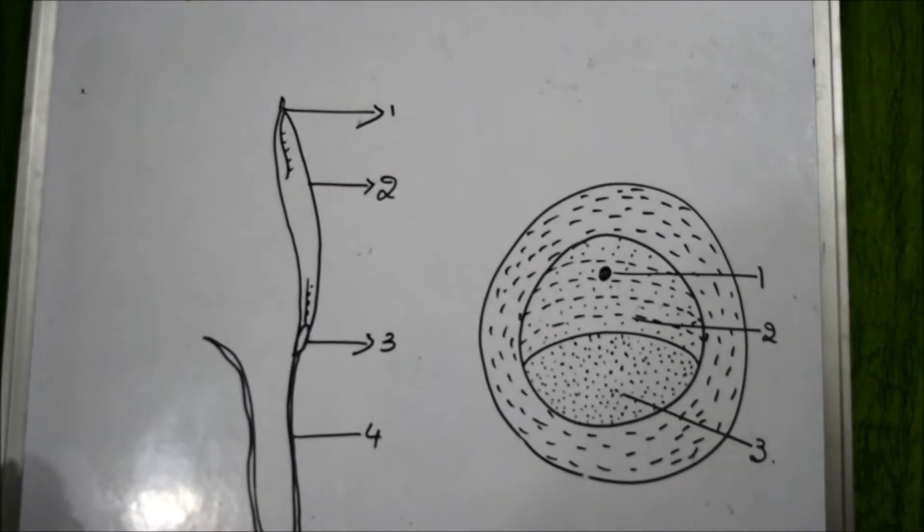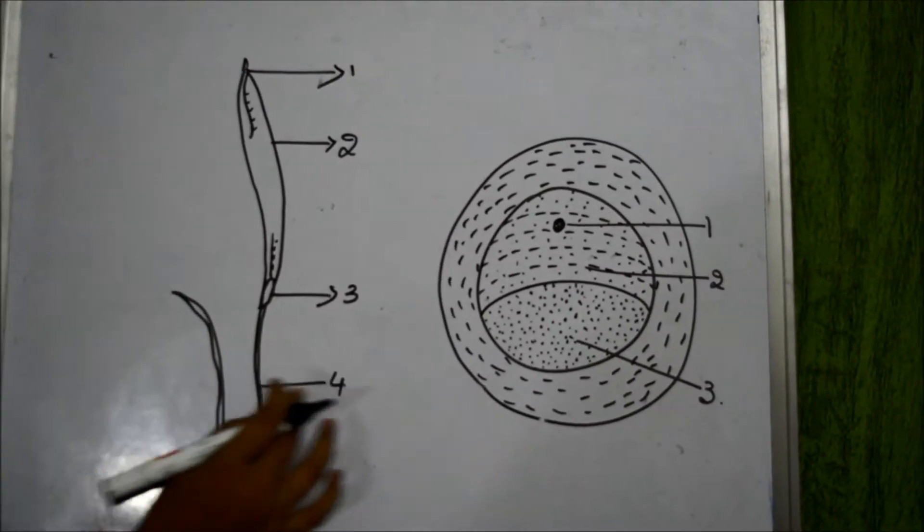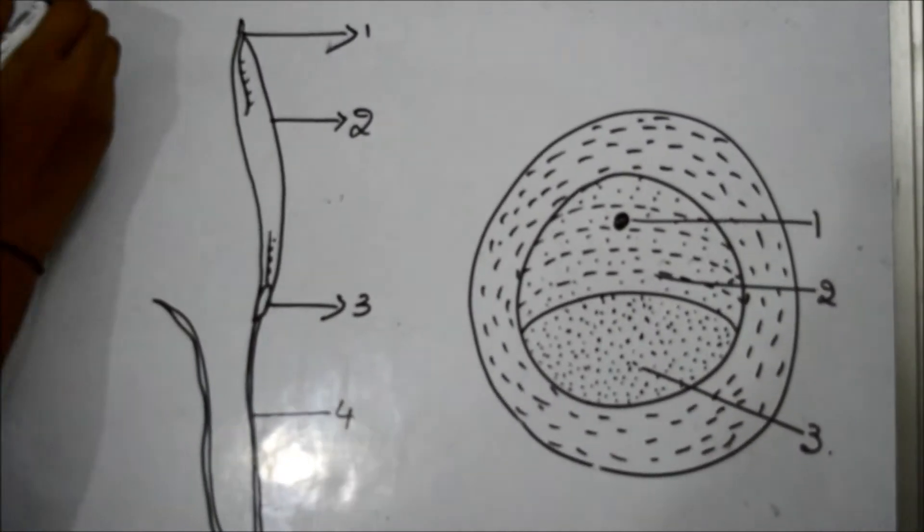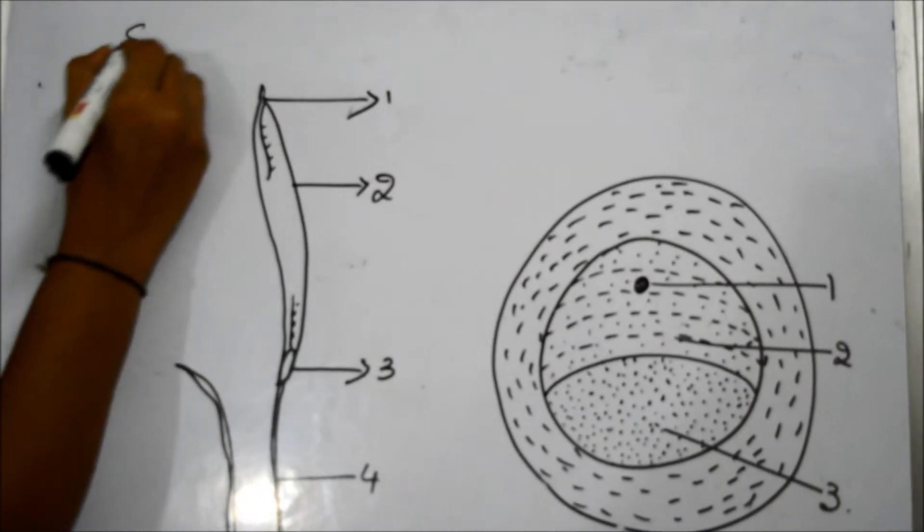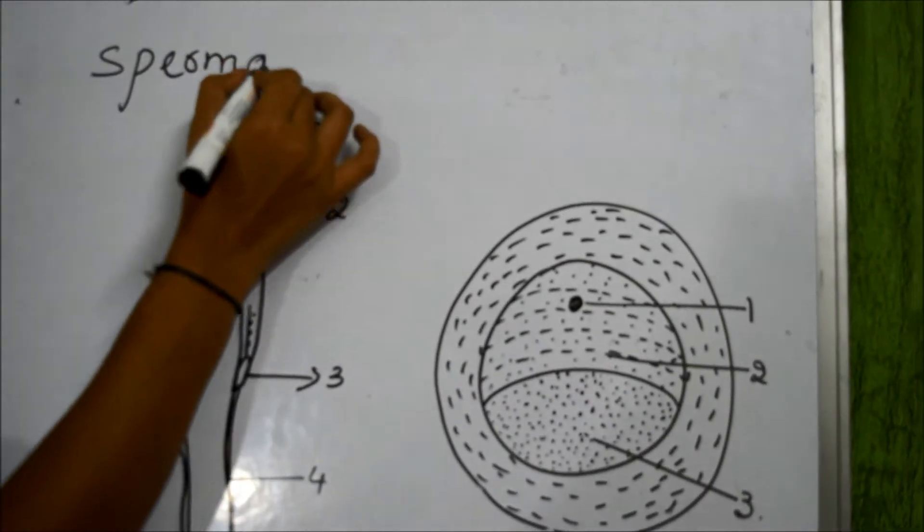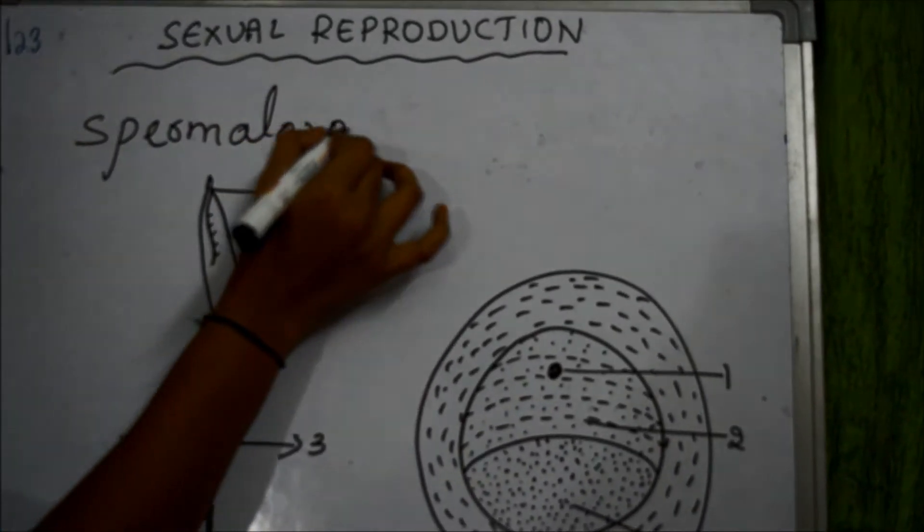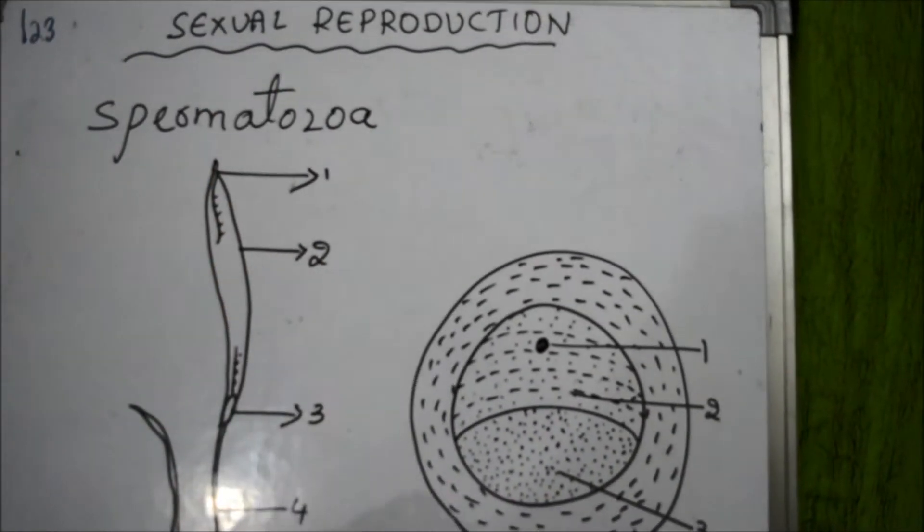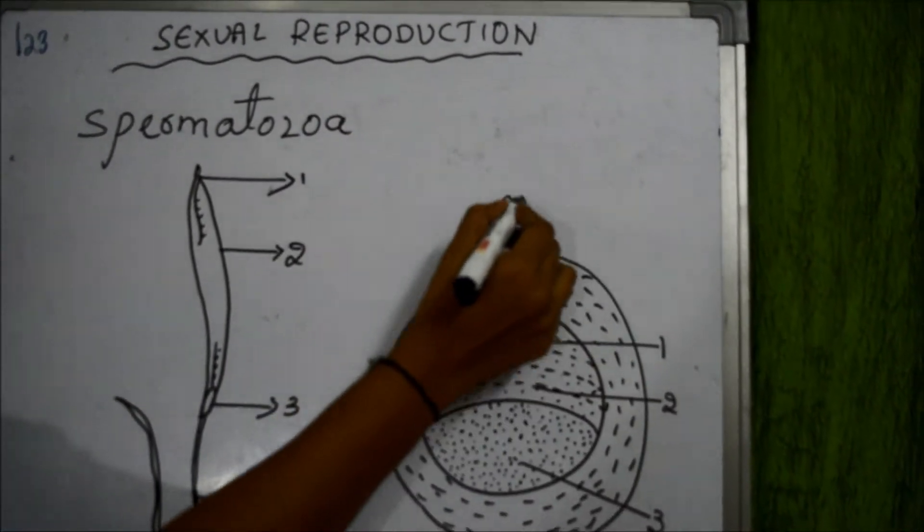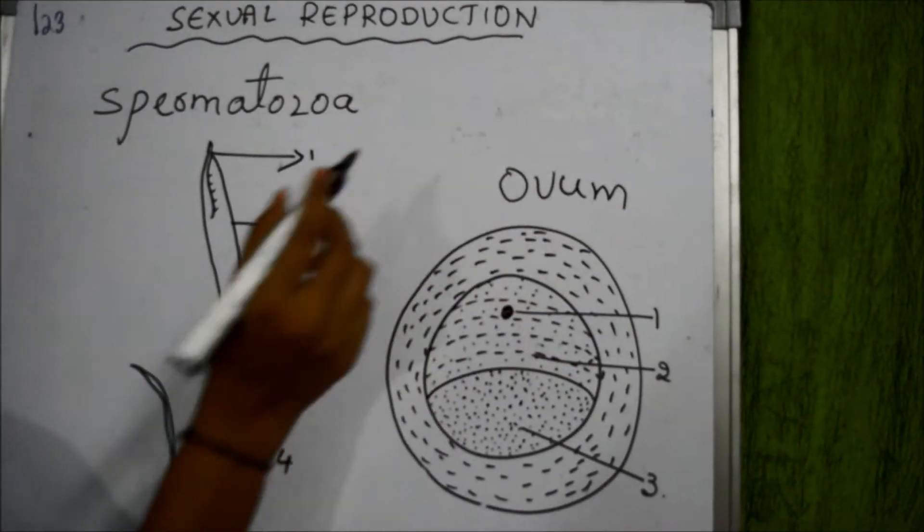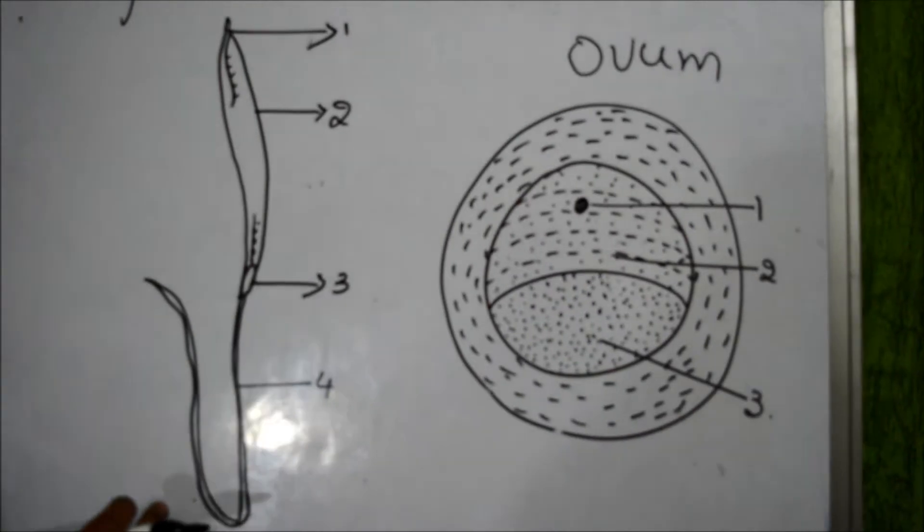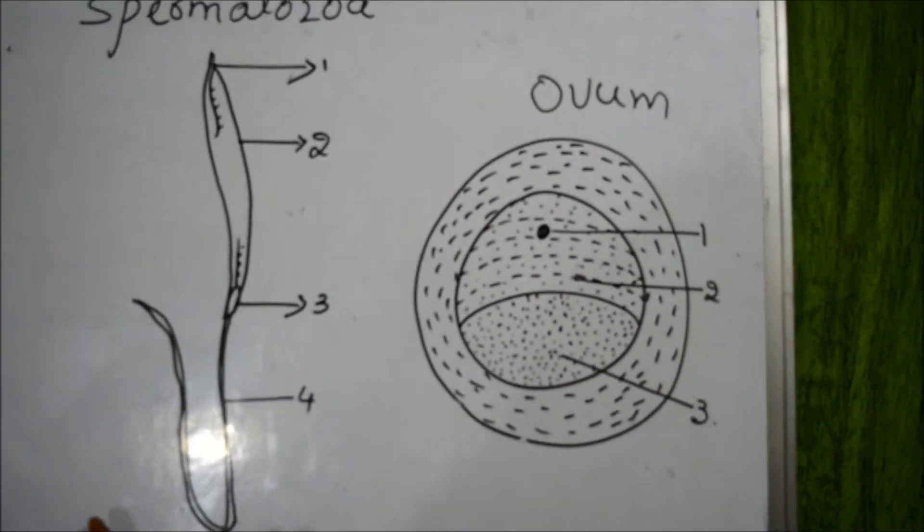Sexual reproduction takes place by the union of male and female sex cells or gametes. The male gametes are called spermatozoa and the female gamete is called ova or ovum. This is the male gamete and this is the female gamete. First, let us come to discuss about the male gamete.